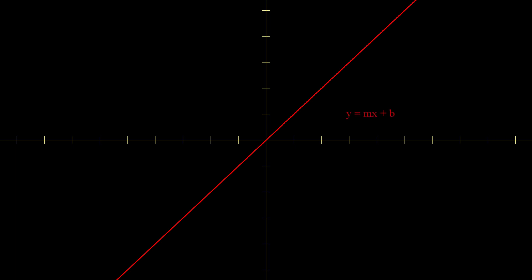The formula for a line is y equals mx plus b, where m is the slope of the line and b is the y-intercept, or you can say its vertical shift.